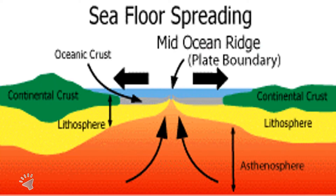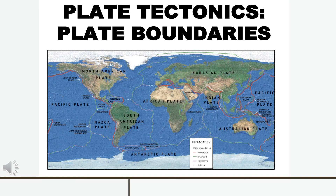Moving on to seafloor spreading. Seafloor spreading is a process that occurs at mid-ocean ridges where new oceanic crust is formed through volcanic activity and then gradually moves away from the ridge. Lastly, plate tectonics is a theory that studies the movement of plates that make up the crust. The Earth's surface is made up of large layers of rocks that are always moving, causing earthquakes and volcanoes. Plate tectonics helps to explain the creation of the different features we see on the Earth's surface.